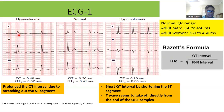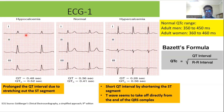Looking at the hypocalcemia ECG, the ST segment is prolonged, leading to a prolonged QT interval — a typical finding in hypocalcemia. One important point: this prolonged QT interval is not due to changes in the T-wave or presence of U-waves as in hypokalemia, but is due to the lengthening or stretching of the ST segment.